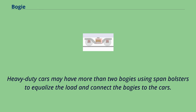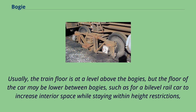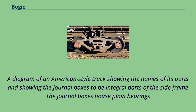Heavy-duty cars may have more than two bogeys using span bolsters to equalize the load and connect the bogeys to the cars. Usually the train floor is at a level above the bogeys, but the floor of the car may be lower between bogeys — such as for a bi-level rail car to increase interior space while staying within height restrictions, or in easy-access, stepless-entry, low-floor trains. A diagram of an American-style truck shows the names of its parts, with journal boxes as integral parts of the side frame housing plane bearings.